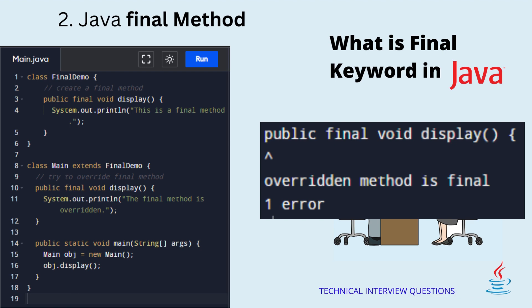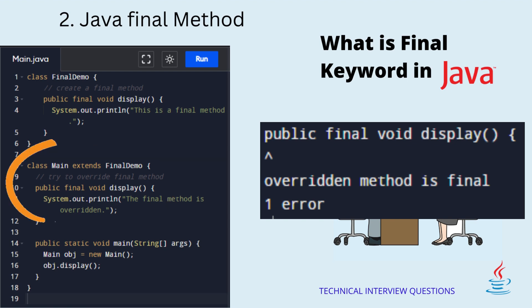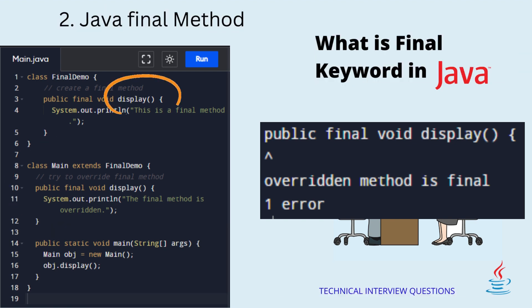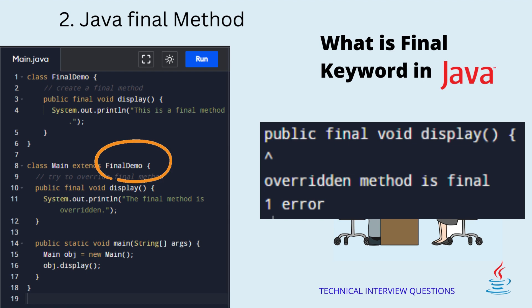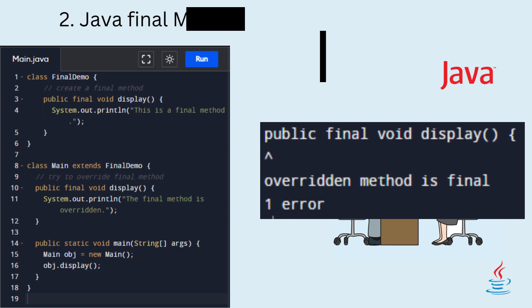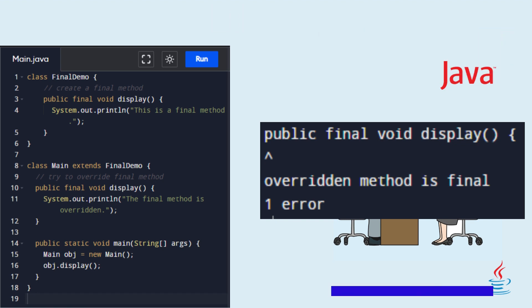2. Java final method. In Java, the final method cannot be overridden by the child class. For example, we have created a final method named display inside the FinalDemo class. Here, the main class inherits the FinalDemo class. We have tried to override the final method in the main class. When we run the program, we will get a compilation error.